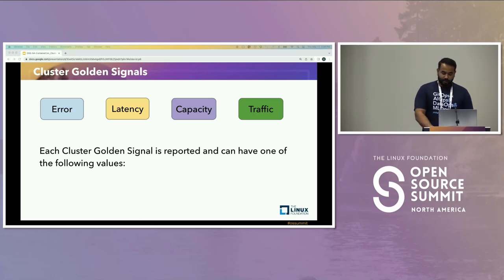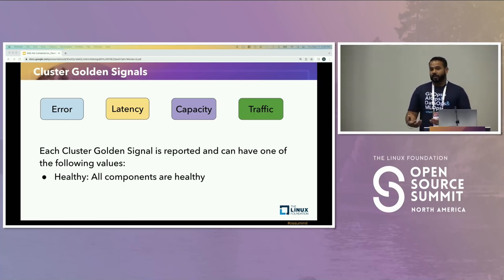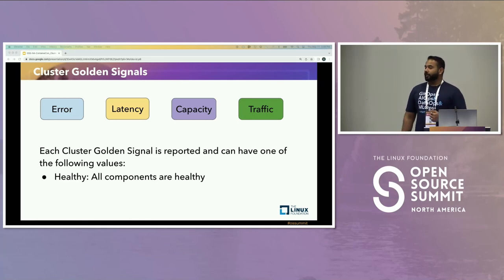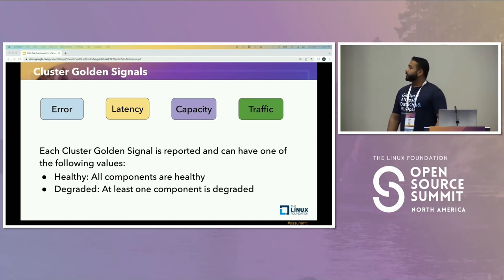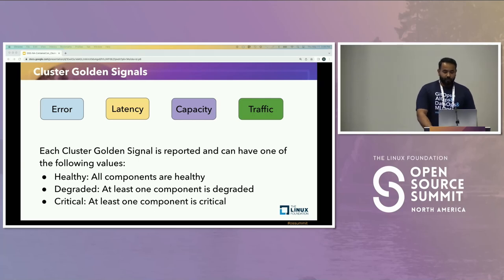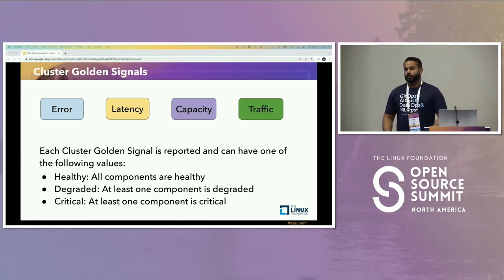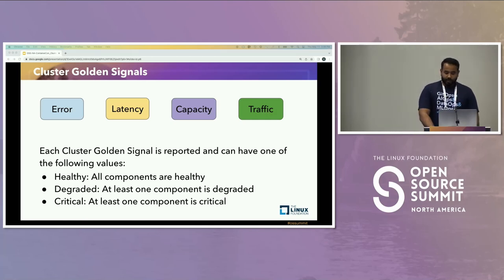Cluster health can be defined in three states: healthy, meaning all components in the cluster are healthy; degraded, when at least one component is degraded we change the cluster state to degraded; and critical, if at least one component is in a critical state, indicating something is really wrong in the cluster.